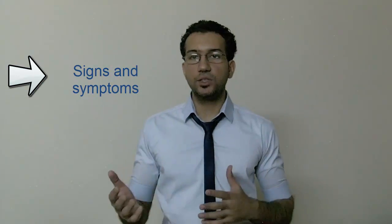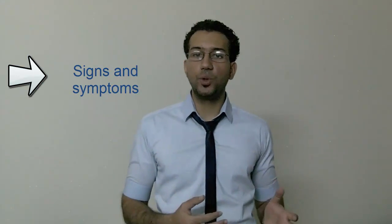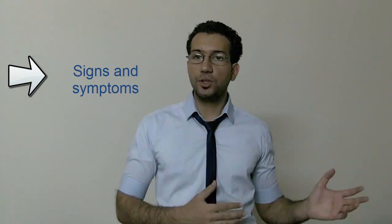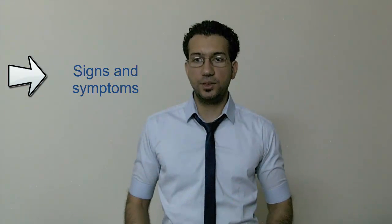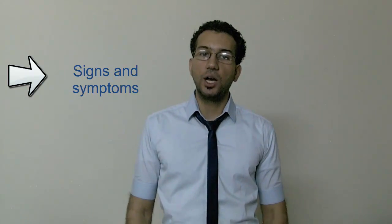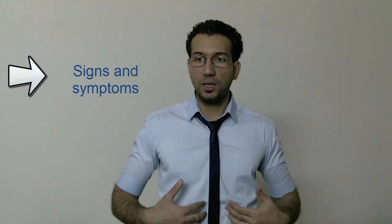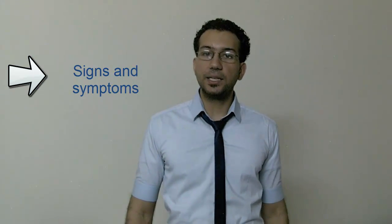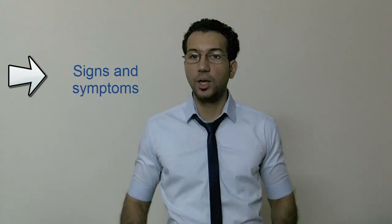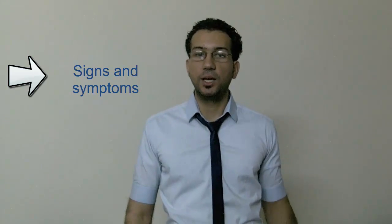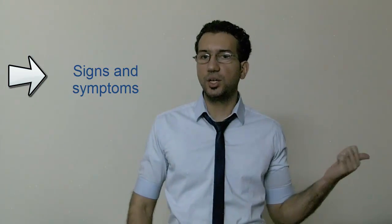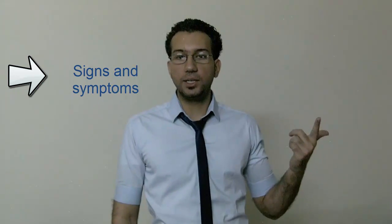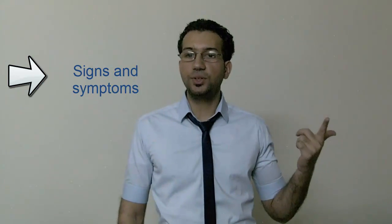The signs and symptoms of peptic ulcer disease vary among individuals. Some people have no symptoms at all, while others may experience abdominal pain — though it doesn't always occur. The pain can differ from person to person and can present as a feeling of fullness, meaning unable to drink as much fluid, hunger, or an empty feeling in the stomach, often one to three hours after a meal.